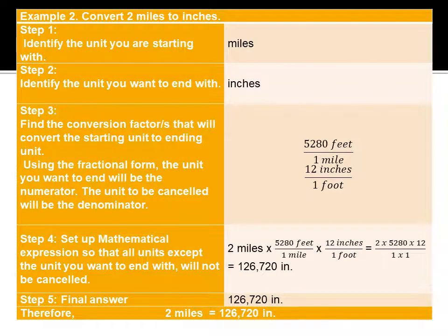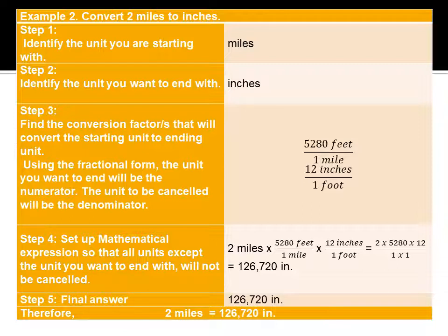For the next example, converting 2 miles to inches: multiply 2 miles × (5,280 feet / 1 mile) × (12 inches / 1 foot). Cancel out miles as well as feet, giving 2 × 5,280 × 12 = 126,720 inches. Therefore, 2 miles is equivalent to 126,720 inches.